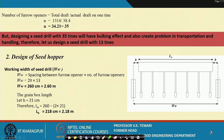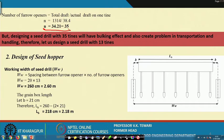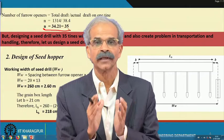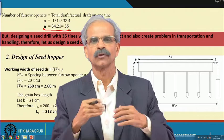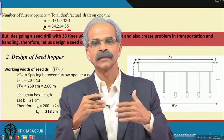Knowing the total draft available from the drawbar and the actual draft per tine, we can calculate the number of furrow openers: n equals 35. Now, as an engineer, you need to make a trade-off. With 35 tines, there would be 18 at the back and 17 in the front. At a spacing of 20 cm each, this gives a total working width of about 7 meters.